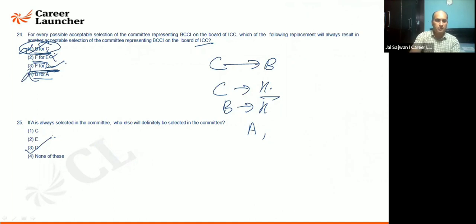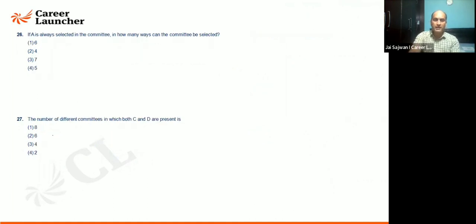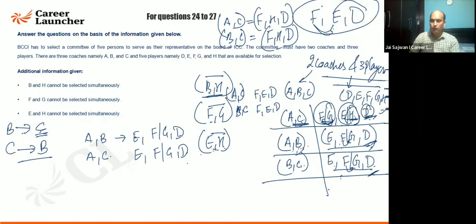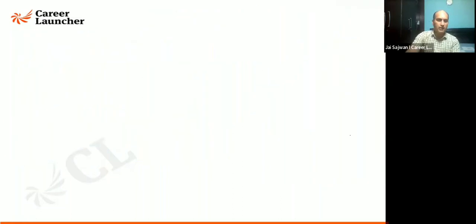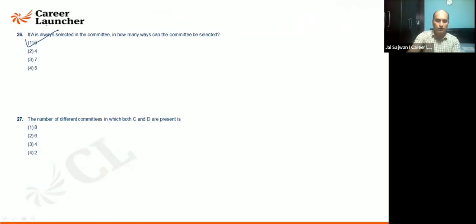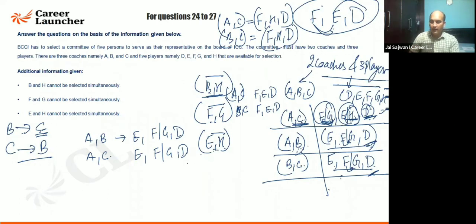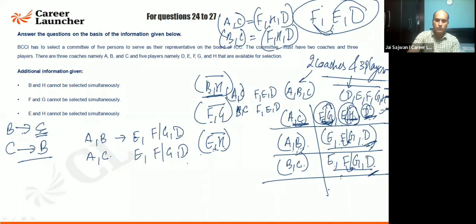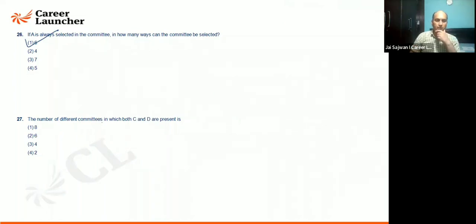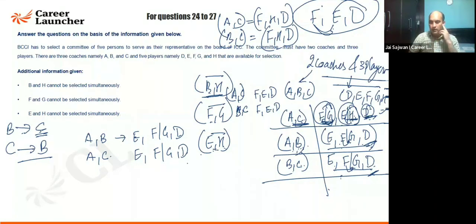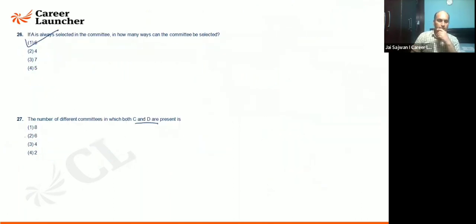If A is always selected, how many ways can the committee be selected? With AC: four combinations; with AB: two combinations — total six ways. Also, the number of different committees in which both C and D are present is also six committees.